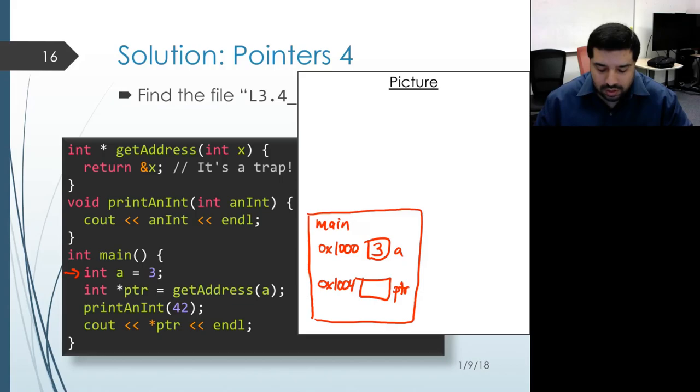On the next line, we have an initialization of PTR, but it gets initialized to the result of calling a function. So that function call has to happen first. Now our process for calling a function is to evaluate the arguments first. So that argument A gets evaluated to its value 3.